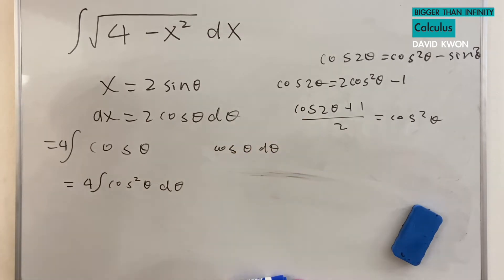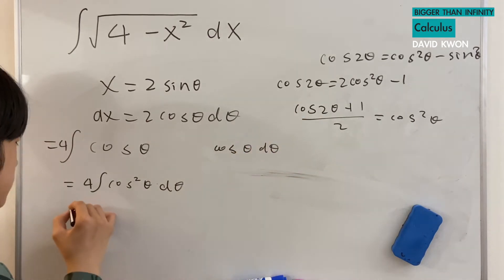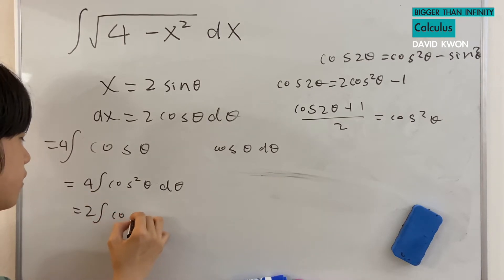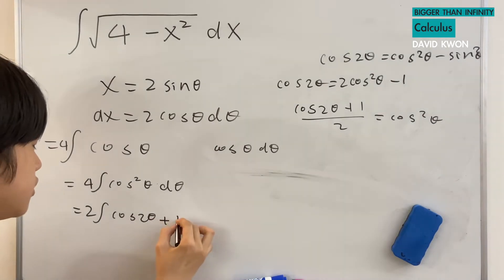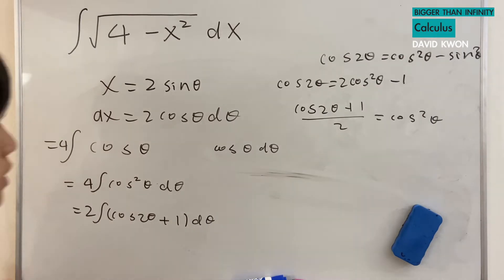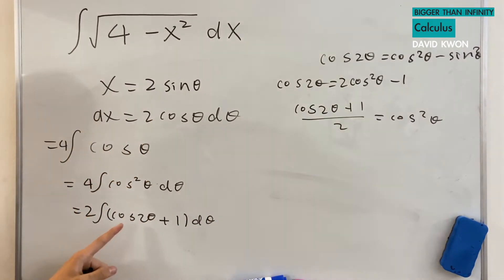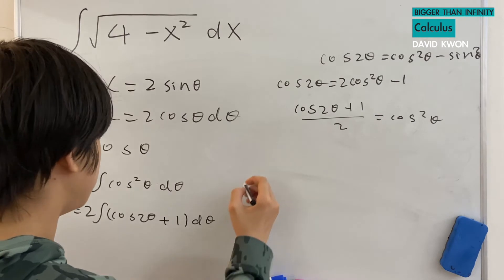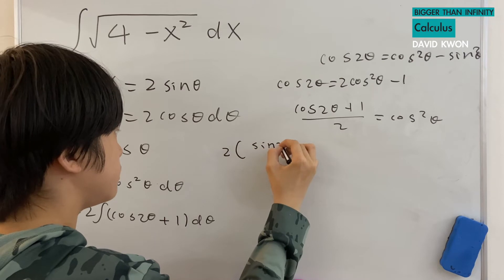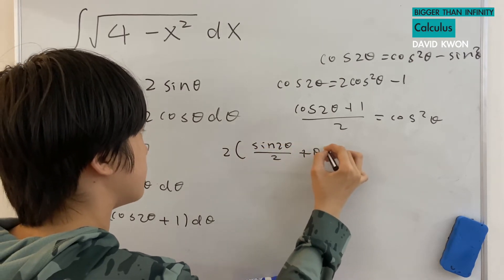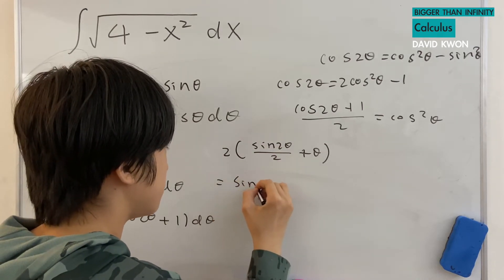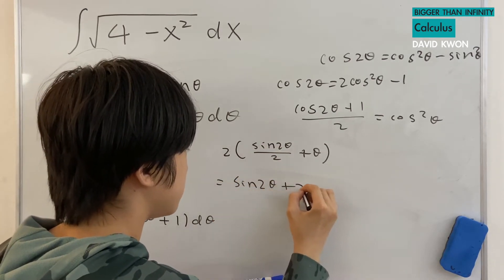So let's put this into here. The 1 over 2 is actually the coefficient again, so that is equal to 2 times the integral of cos 2 theta plus 1 times d theta. That integral is really easy, and it would get us to 2 times sin 2 theta over 2 plus theta, or that is equal to sin 2 theta plus 2 times theta.